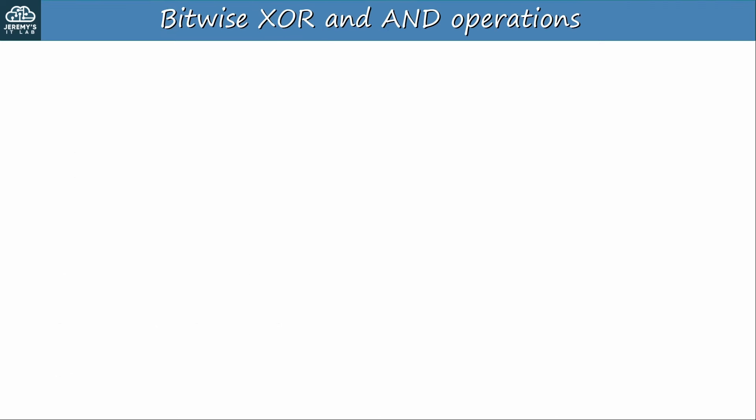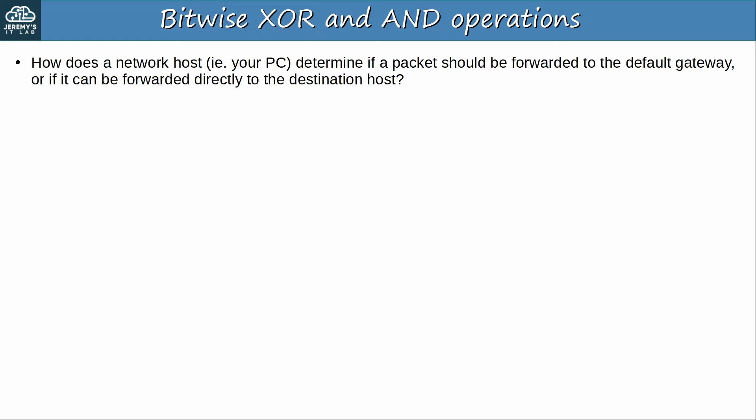Now let's do some math. Don't worry, it's not so complex. Although I think it's a good thing to understand for anyone studying networks, you will not be asked to do something like this on the ENCOR exam. The question is: how does a network host, for example your PC, determine if a packet should be forwarded to the default gateway, for example your home router, or if it can be forwarded directly to the destination host.